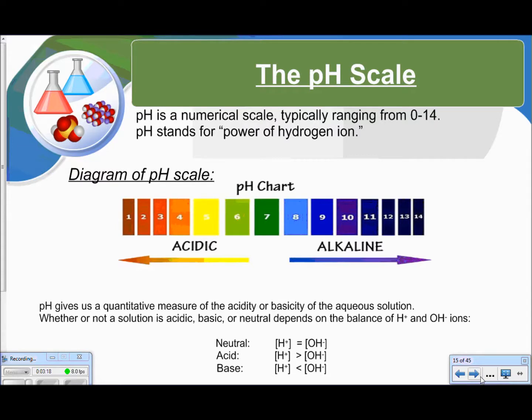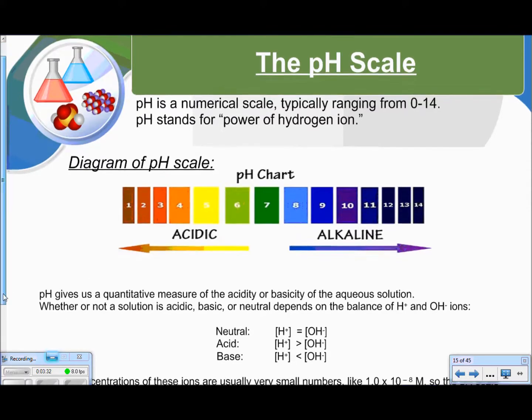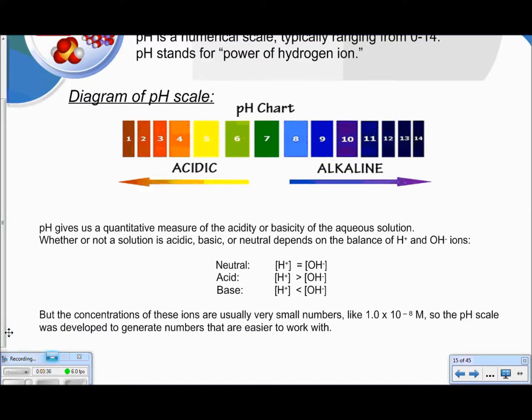So the pH scale. It says pH is a numerical scale typically ranging from 0 to 14. pH stands for power of hydrogen ion. So we talked about this in the last video, what the pH scale looks like. It says pH gives us a quantitative measure of the acidity or basicity of the aqueous solution. Whether or not a solution is acidic, basic, or neutral depends on the balance of hydrogen and hydroxide ions. So if it's neutral, then these ions are going to be equal. If it's acidic, then you'll have more hydrogen ions. If it's basic, you'll have more hydroxide ions. But the concentration of these ions are usually very small numbers, like 1.0 times 10 to the negative 8 molar. So the pH scale was developed to generate numbers that are easier to work with.